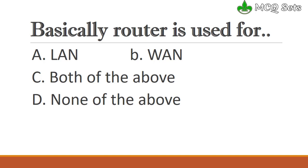Basically, what is the router used for? Option A: LAN. Option B: WAN. Option C: both of the above. Option D: none of the above. This is the problem.